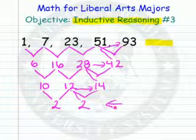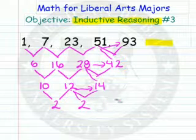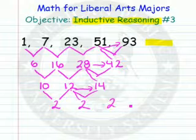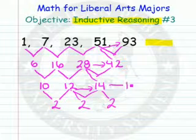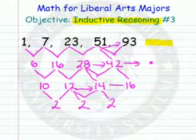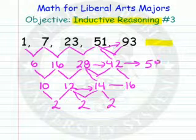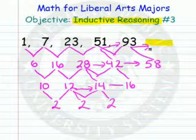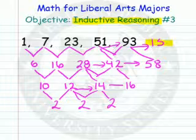Here's what we can do. If we put another one of our two's right here, we'll do that same thing again. 2 and 14 gives me 16. 16 and 42 gives me 58. And 58 and 93 gives me 151. And that's the next term in that sequence.